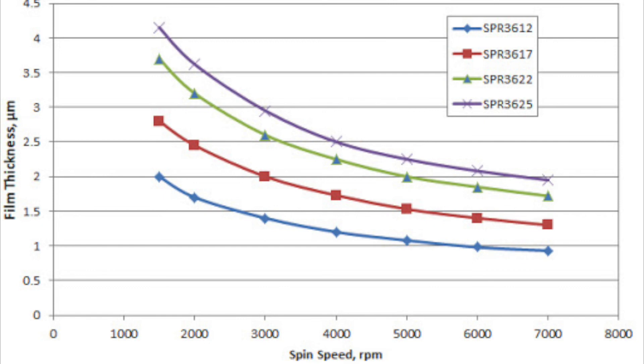A thinner resist allows for higher resolution lithography, while a thicker one might work better for doing liftoff metallizations of thicker metal films, but with less resolution. Now I'll go into some problems you might have during spinning.